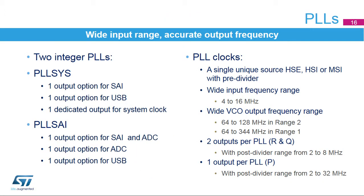The PLLs embedded in the STM32WB microcontroller provide a flexible way to generate the required frequency for the system or peripheral clocks, with a wide input frequency range from 4 to 16 MHz. The PLLs share the same clock source — HSE, HSI, or MSI — which can be pre-divided. The PLL VCO has a wide frequency range from 64 to a maximum of 344 MHz in range 1 and 128 MHz in range 2. Both PLLs provide three different output clocks derived from the VCO via post-dividers /P, /Q, and /R. The PLL Sys is used to generate the system clock and SAI and USB kernel clocks. The PLL SAI is dedicated to generating kernel clocks for the SAI, ADC, and USB peripherals.